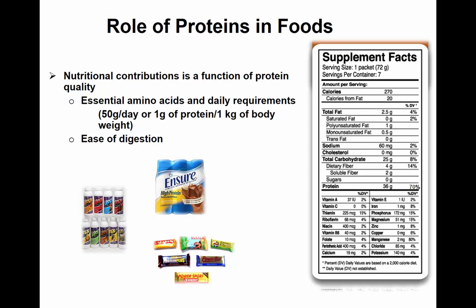So PDCAAS: the maximum is one and as the number goes down, the protein is limiting in either amino acids or digestibility. Why does this matter? Because quantity is not what you report for percent daily value — it's quality that goes into the calculation. If you have 36 grams of protein with a PDCAAS of one, that's 36 out of 50, or 70%. But if you have 50 grams with a PDCAAS of 0.8, only 40 grams are available out of the 50. It's not just the quantity, it's the quality that matters.